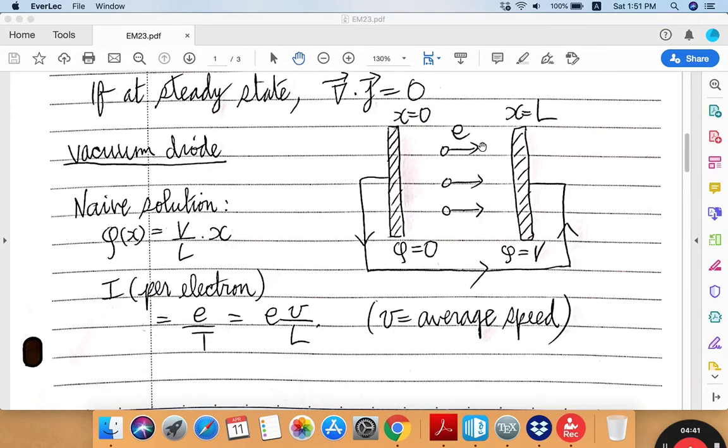And if some function whose second derivative is zero, then that function is a linear function. And keeping track of the boundary conditions, namely that this linear function will have a zero value here and a value equal to V over there, immediately fixes the potential to be this particular linear function of the position x. So now the current per electron is simply the electric charge divided by the time that it takes to flow from one plate to the other.